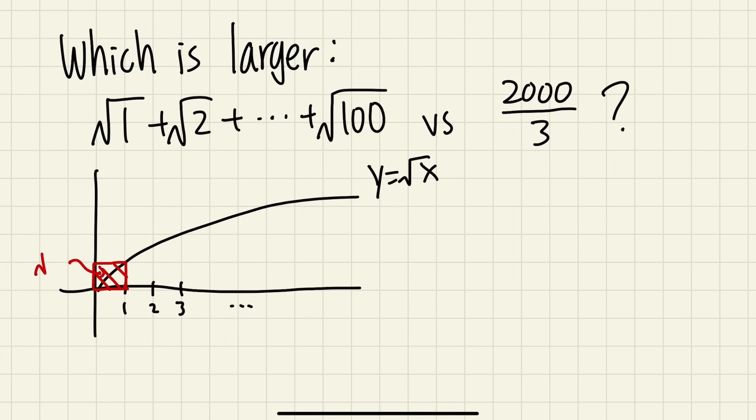This is square root of one because the height is when you plug in one into the square root function, so it's square root of one, and the base is one. So square root of one times one is square root of one.